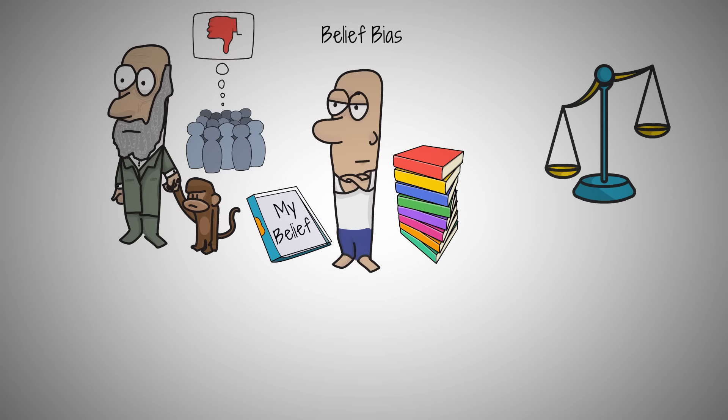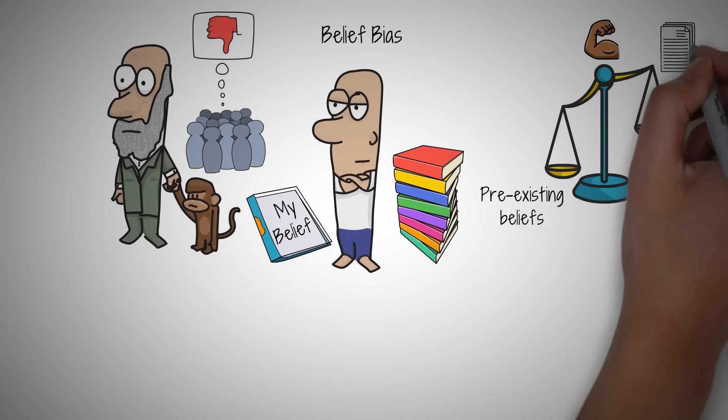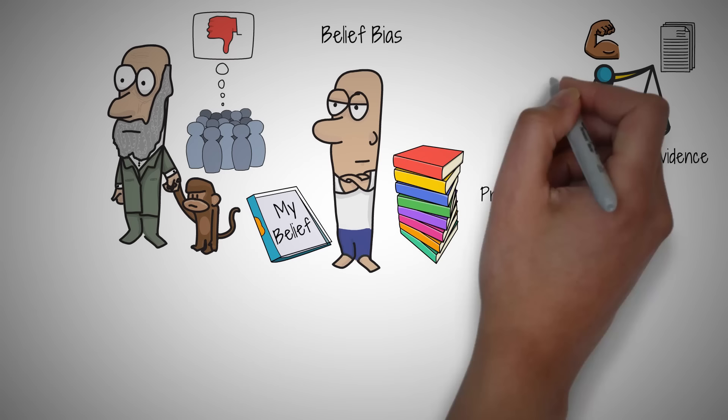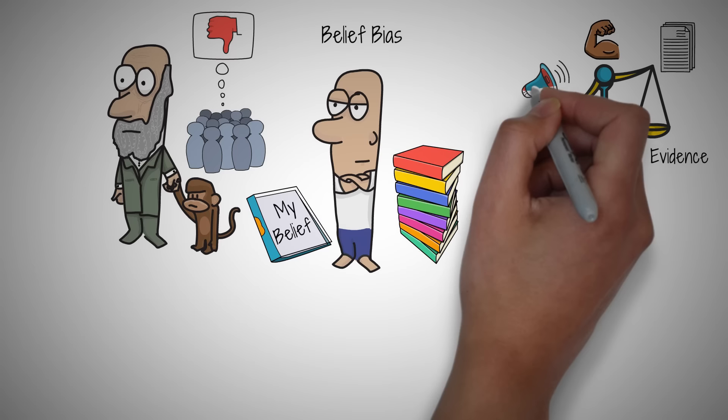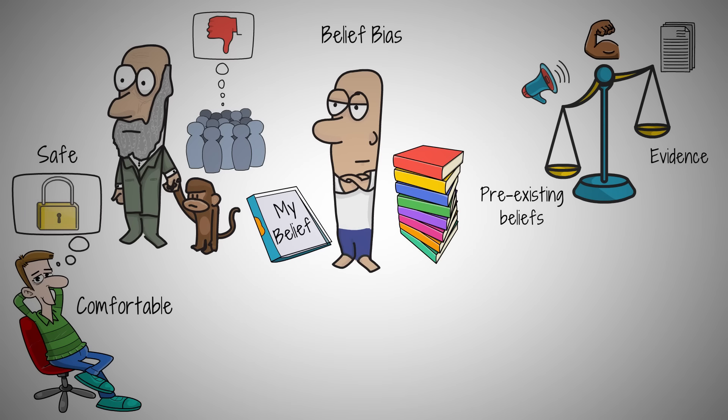Belief bias occurs when our evaluation of the logical strength of an argument is influenced more by our pre-existing beliefs than by the actual evidence. It's why we might ignore compelling data if it contradicts what we hold true, or why we might accept weaker arguments that support our views. This happens because what we already believe feels comfortable and safe, making it hard to accept new or different ideas.